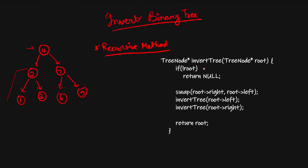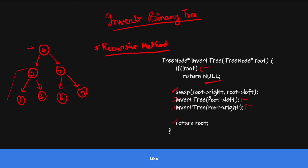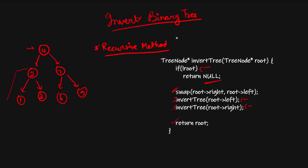In the recursive code: if root is null, we return. Otherwise we swap the right and left subtrees, then recursively call for the left subtree and the right subtree to swap their nodes. Once left subtree, right subtree, and root are all done, we return the current root. The time complexity and space complexity of both solutions are O(n). I hope you understood both solutions — if it helped, don't forget to like and subscribe!